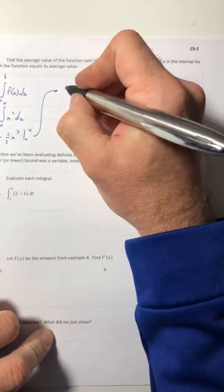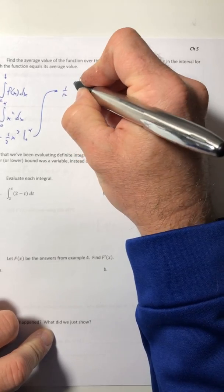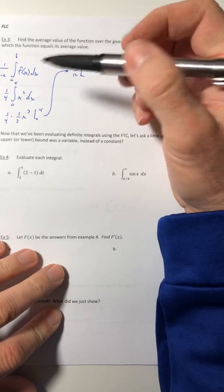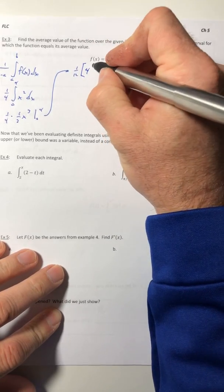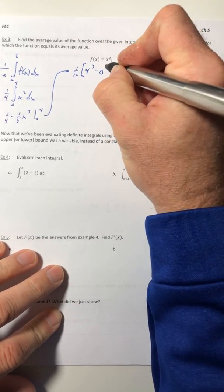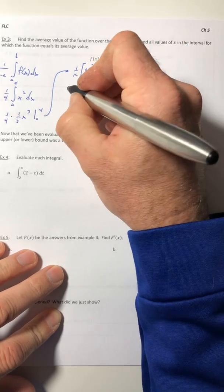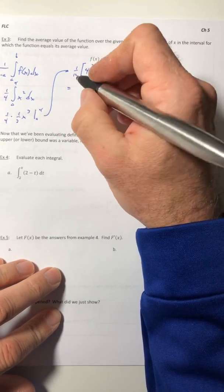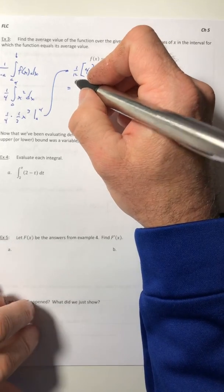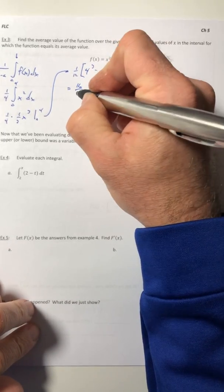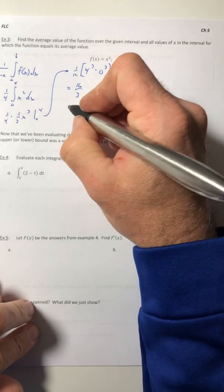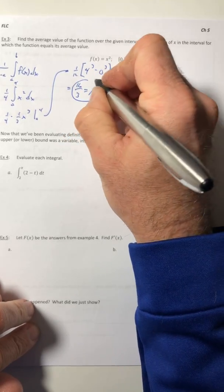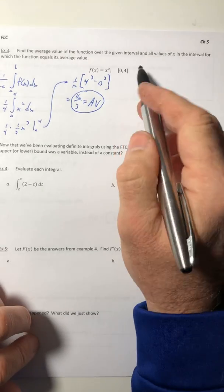So if we integrate x squared, that's just 1/3 x to the 3rd. And then we're going from 0 to 4. So a 4th times a 3rd, that's just a 12th. And then we need to plug in the bounds. So plug in the 4, and then plug in the 0, which is nice. So we end up with 64 times a 12th, which would be 16 over 3. So that is our average value. That was the first part.